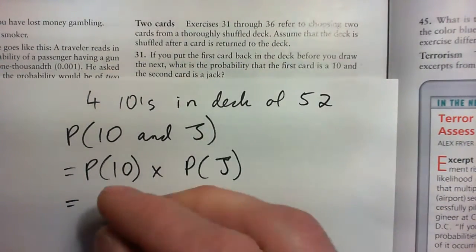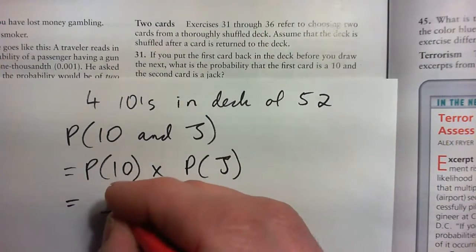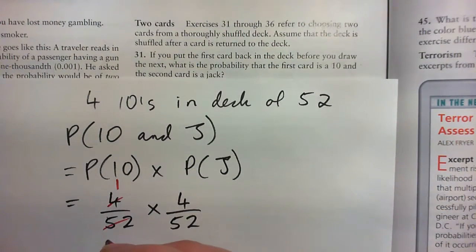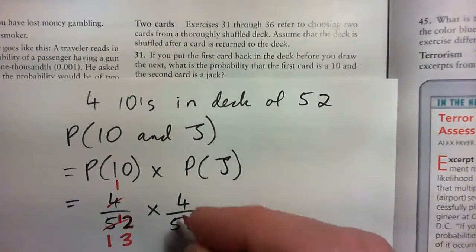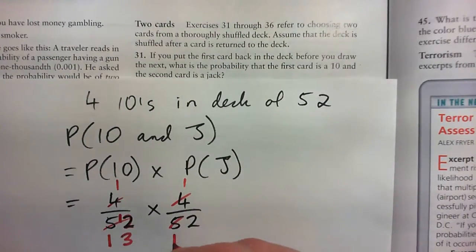And in each case, we can cross-cancel. 4 into 4 goes once, 4 into 52 goes once into 5 and 1 over, and 4 into 12 goes 3 times. See that? 4 into 4 goes once, 4 into 5 goes once remainder 1.